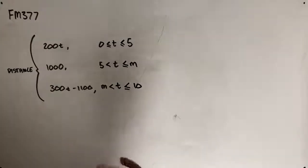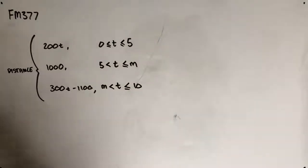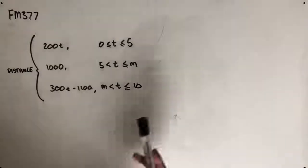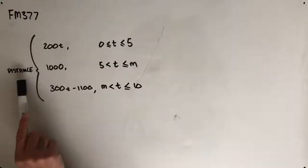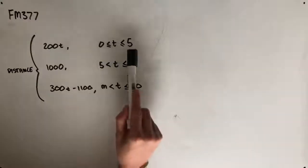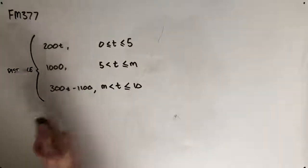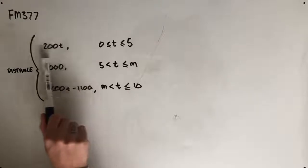So what we're going to do from here, this is a seemingly tricky question, but when we start to delve into what these equations actually mean, it starts to make more sense. We can see here that her distance is 200t for the values between 0 and 5 minutes. What this should tell us is that for every minute, within the first leg of Olivia's bike ride, every minute she's traveling 200 meters.